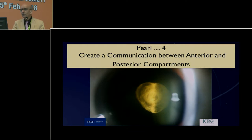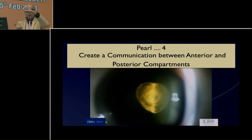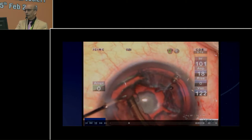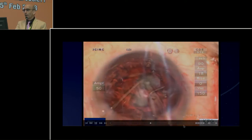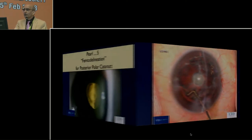Fourth principle: establish a communication between the anterior and posterior compartment within the bag. Once you remove the nucleus, you have an epinucleus. Make sure the space in front of the epinucleus and the critical space between the epinucleus and posterior capsule have communication, so there is no chance of building hydraulic pressure. Remove the away part of the epinucleus to establish communication — fluid then moves freely between compartments, and then you can do subcapsular hydrodissection as needed.